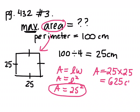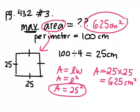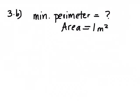625 centimeters squared. So if the perimeter is 100 centimeters, the greatest possible area for the shape would be 625 centimeters squared. Now we're doing the opposite. In this question, they want you to find the minimum — the least possible perimeter, the smallest perimeter you can get — if the area is 1 meter squared. What shape will always produce the least possible perimeter?